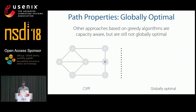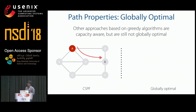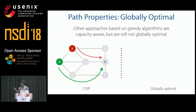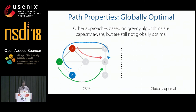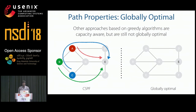Now let's modify our algorithm to be capacity-aware, similar to CSPF, which finds the shortest path with available capacity. With uniform 100 Gbps capacities and flows arriving sequentially at 100 Gbps each: A takes the shortest path through G; B cannot use link G since it is saturated and takes a slightly longer path; C must take an even longer detour. This is clearly suboptimal because paths were not selected in a globally optimized manner. Instead, if we had computed paths by taking every source-destination pair into account simultaneously, we could have computed a much better set of paths.